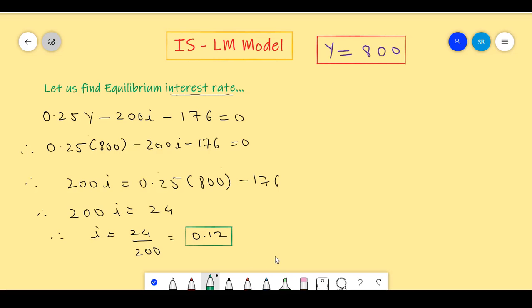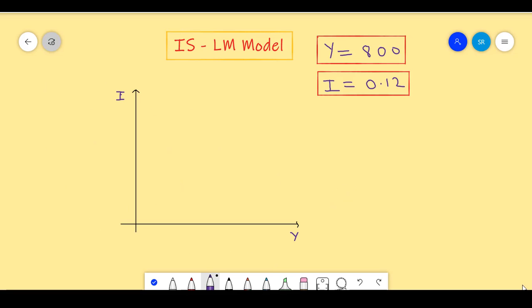This is the equilibrium interest rate. And now, we have both the equilibrium output and the equilibrium interest rate. This means, if your IS curve looks like this and the LM curve looks like this, then the intersection between both generates equilibrium output of 800 and equilibrium interest rates of 12%.